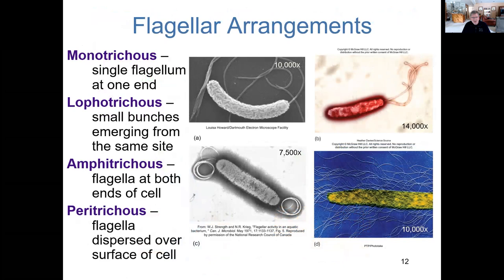There are four major flagellar arrangements. Monotrichous means one flagellum extending from one end. Lophotrichous means multiple flagella at one end. Amphitrichous means flagella extending from both ends. Peritrichous means flagella extending all over the entire surface of the cell.